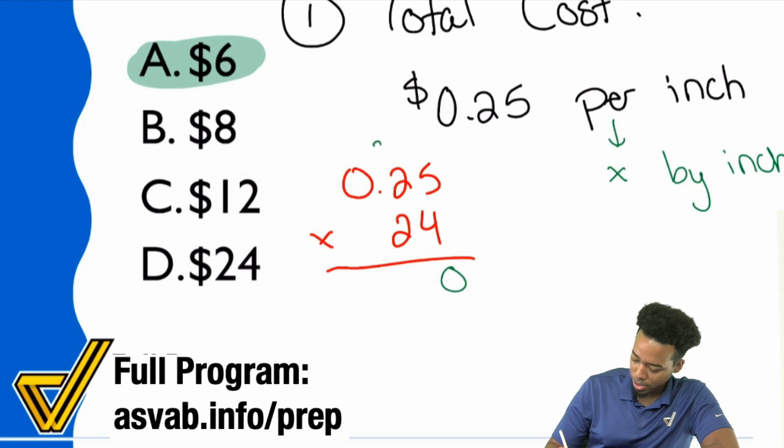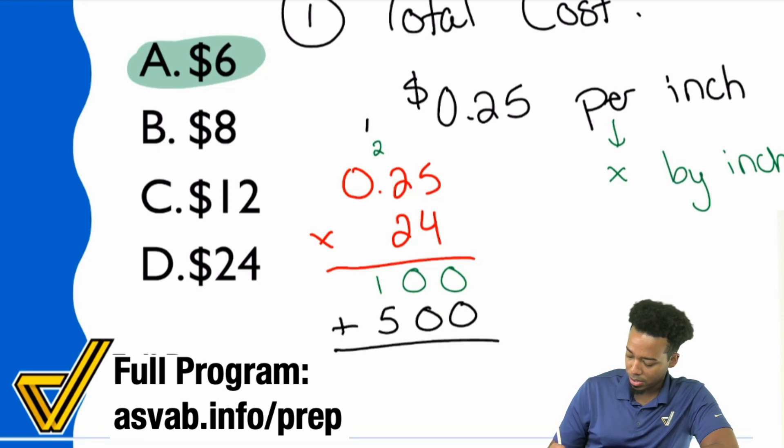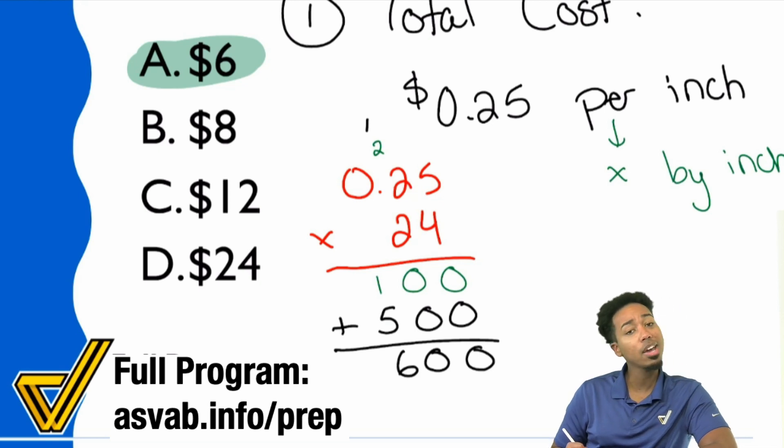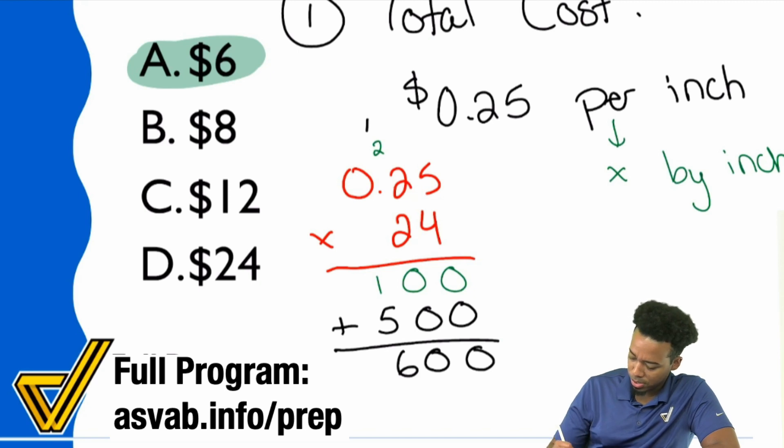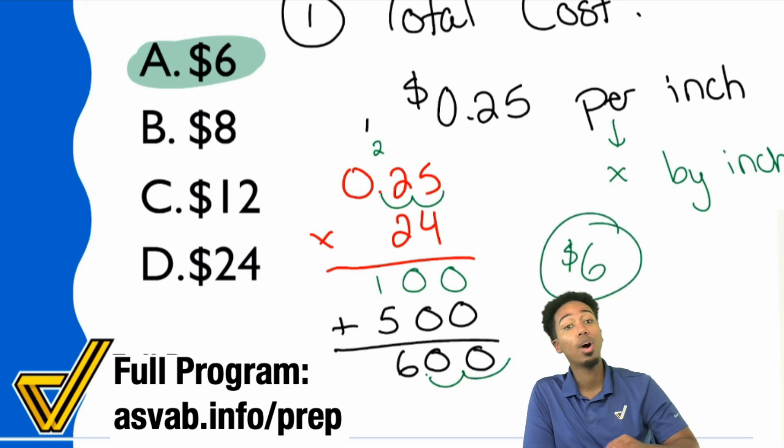5 times 4 is 20. 2 times 4 is 8. Carry the 2 is 10. Next, bring a 0 down. Then we have 5 times 2 is 10. 2 times 2 is 4. Carry the 1 is 5. Add these together and we have 0, 0, 6. And then how many decimal places are we supposed to bring back, everybody? 2. 2 decimal places. 1, 2, 1, 2. And we have 6 dollars for the steel wire.